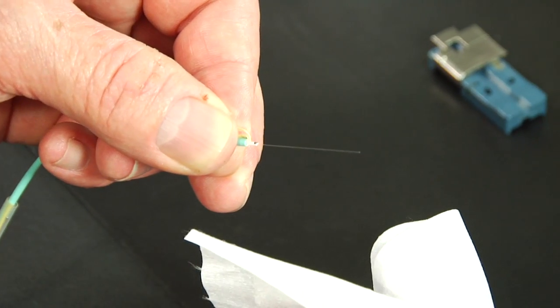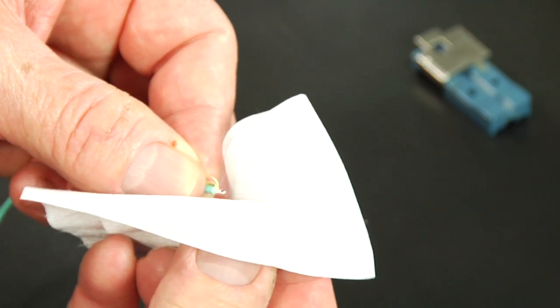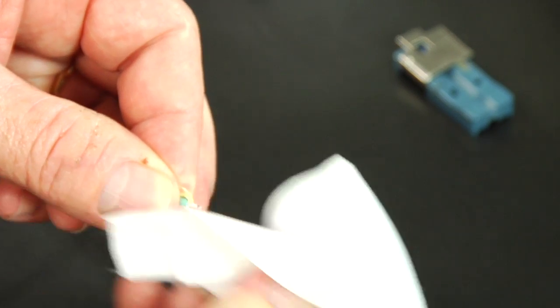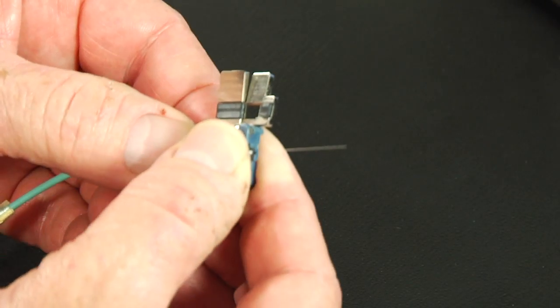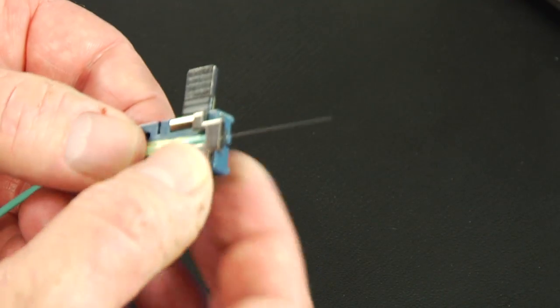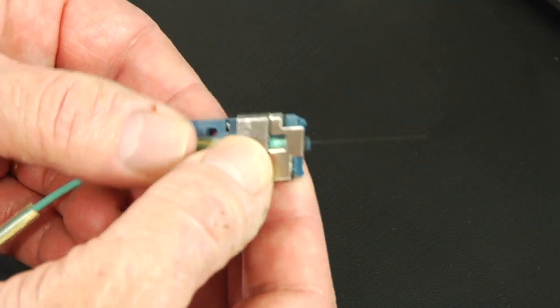Clean the bare fiber using a lint-free wipe moistened with fiber preparation fluid or 95% or better isopropyl alcohol. Pull the Kevlar back and place the cable into the 2 millimeter fiber holder with 900 micron buffered fiber in the v-groove. Close the fiber holder clamp.